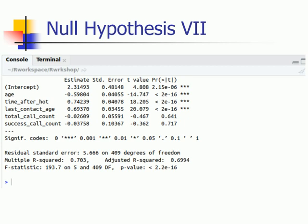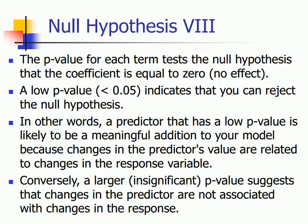In other words, a predictor with a low p-value is likely to be a meaningful addition to your model because changes in the predictor's value are related to changes in the response variable. Conversely, a larger p-value suggests that changes in the predictor are not associated with changes in the response.